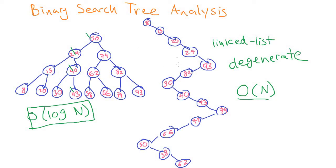Most binary search trees would be somewhere in between — probably not perfectly 100% balanced, but also not degenerate. It turns out that if you randomly build your binary search tree, it'll be more balanced than not, and you'll have pretty good performance even if you don't explicitly ensure it's 100% balanced. The next thing we'll talk about is an algorithm to balance a tree given one that is degenerate or somewhere in between.